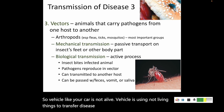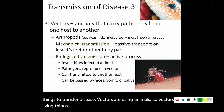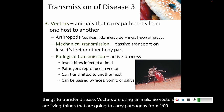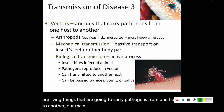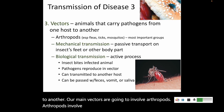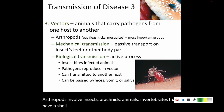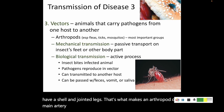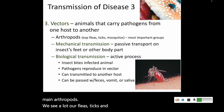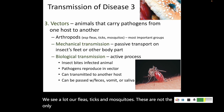Vectors are living things that carry pathogens from one host to another — they use animals. Our main vectors involve arthropods. Arthropods include insects, arachnids, and invertebrates that have a shell and jointed legs — that's what makes an arthropod. Our main arthropods we see most are fleas, ticks, and mosquitoes — these are not the only vectors, but they are the most common.